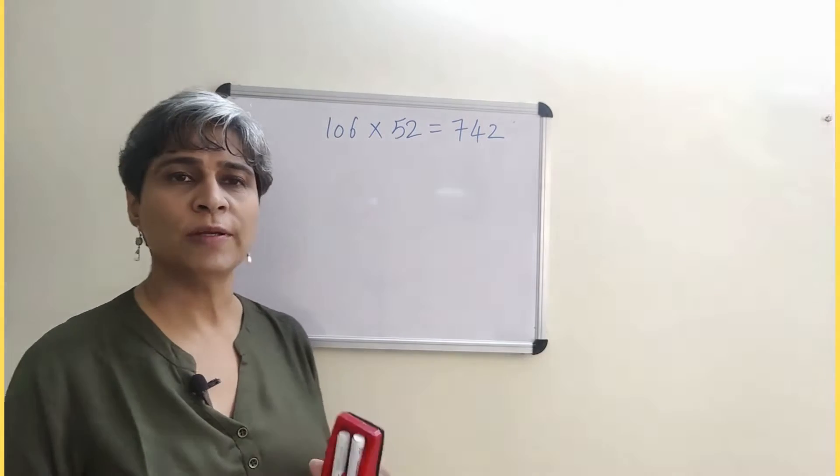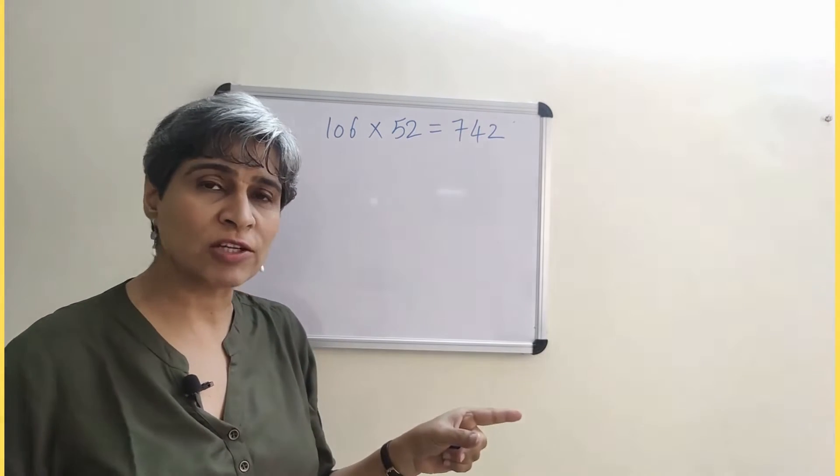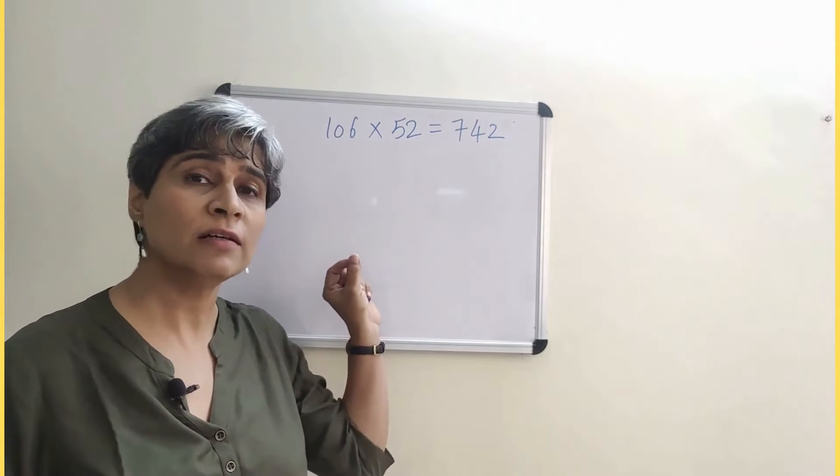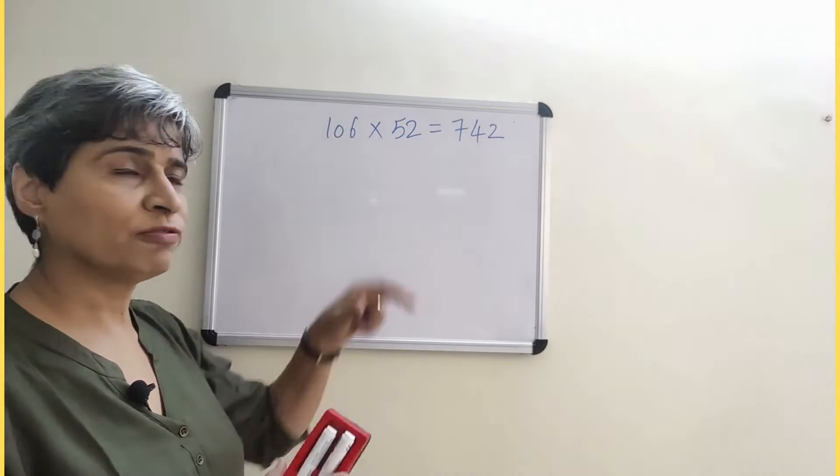Look at this expression. Rather than multiplying the whole thing again, another strategy I can use is I can check if my answer is a reasonable one. How do I do that? I use rounding off.